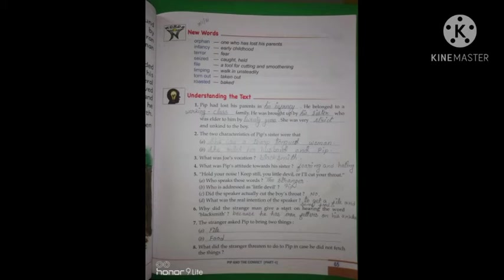Now you come to understanding the text. Your first question is, Pip had lost his parents in his infancy. He belonged to a working class family. He was brought up by his sister, who was elder to him by 20 years. She was very strict and unkind to the boy.